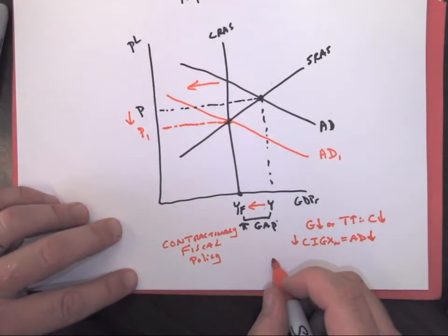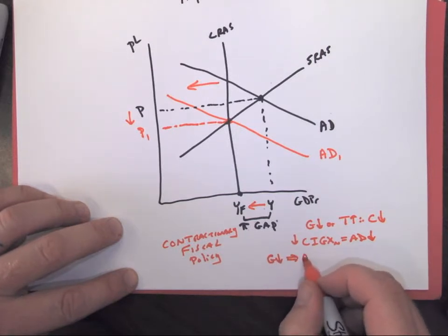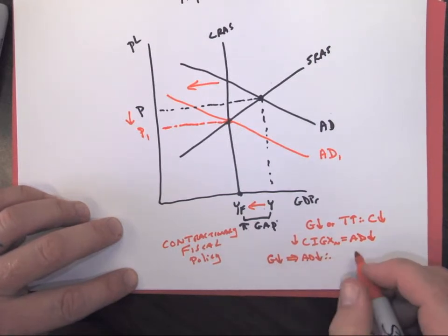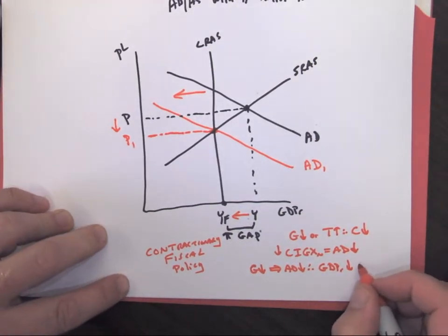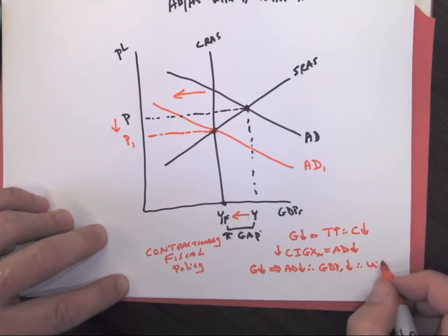Now let's tell our storyline. Government spending goes down, that's going to lead to aggregate demand decreasing. Therefore GDP, real GDP, is going to decrease and that is going to make our unemployment rate go up. That's unfortunate but we did get our goal right there.